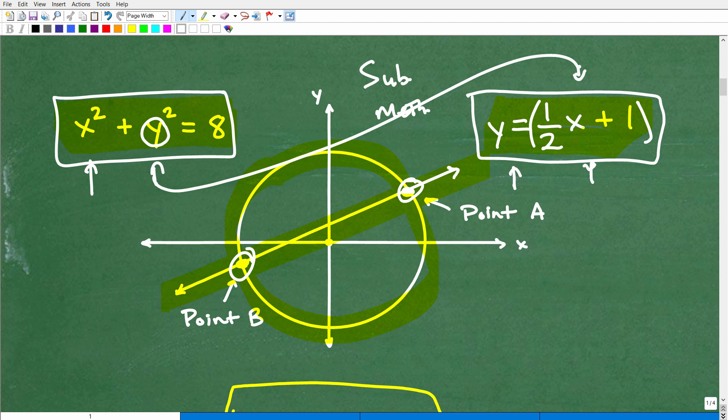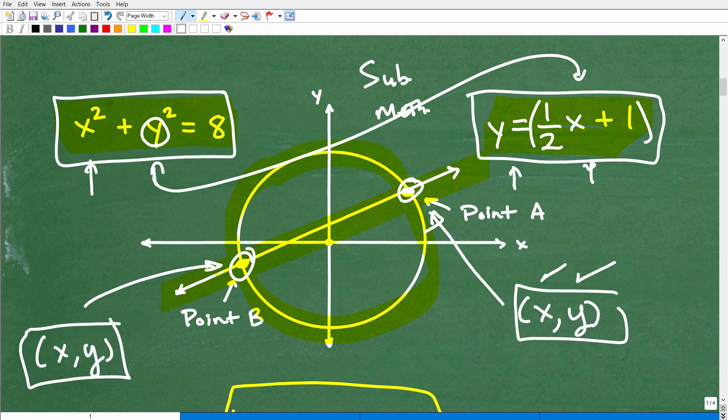But what are we looking for? Okay. Well, we're looking for, as our solution, we're looking for an x and a y. Okay, and we're looking for one x and one y that represents this point. And we're looking for another x and another y that represents this point.